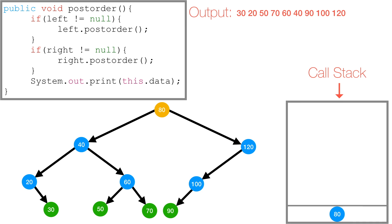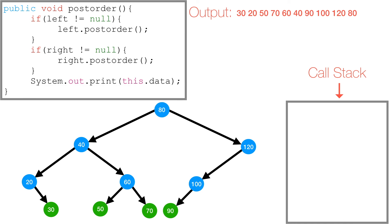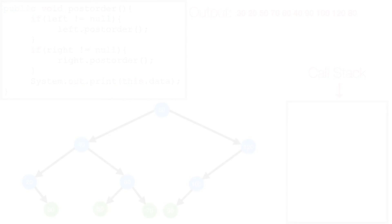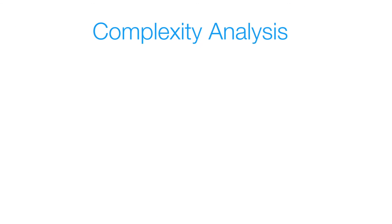We've explored 80's left and right subtrees, so we continue with the rest of the method and print 80. 80 then gets popped off the call stack, and we're finally done with this method.